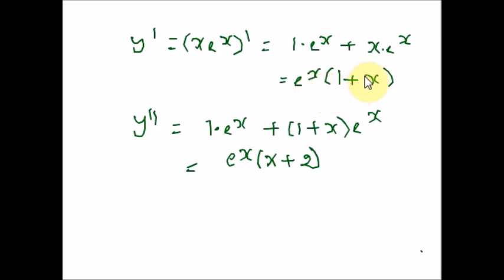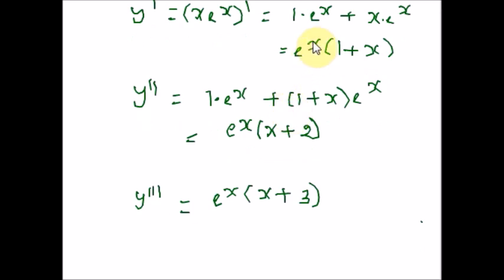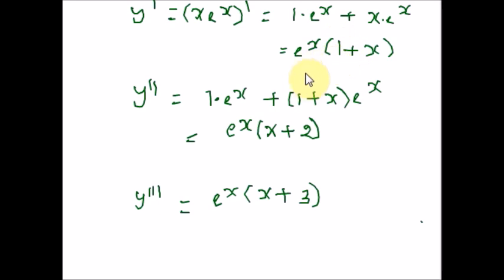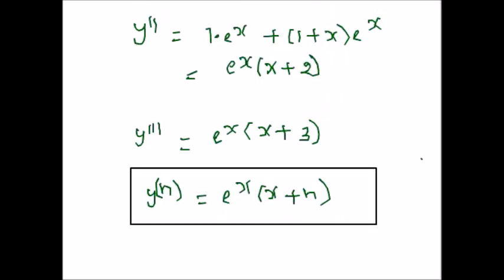Here the derivative answers are also products, so we use the product rule again. For the first derivative we get eˣ(x + 1), second derivative eˣ(x + 2), third derivative eˣ(x + 3). You can relate the number to the order of the derivative — for the nth derivative it is eˣ(x + n). Hope you are clear with this pattern.